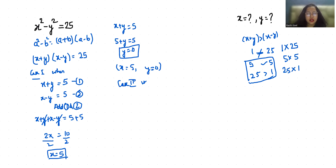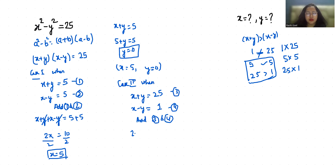Case two: when x plus y equals 25 — equation 3 — and x minus y equals 1 — equation 4. Adding equations 3 and 4: x plus y plus x minus y equals 25 plus 1. The y terms cancel, giving 2x equals 26.